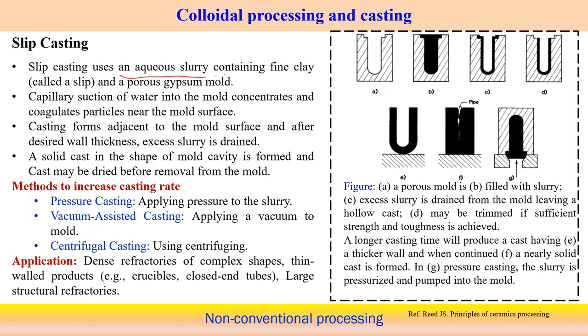One way to extract the liquid from this slurry leads to a process called slip casting. In slip casting we use a porous medium — for example gypsum can be used as a mold material. An aqueous slurry is poured into the mold and a consolidated layer builds up, while water passes through the porous medium by capillary action. The slurry contains fine clay, which is known as the 'slip' — hence the name slip casting.